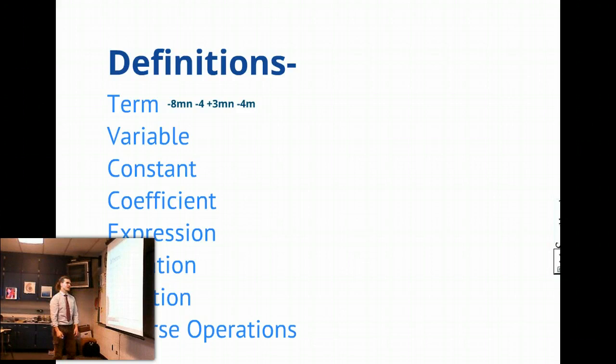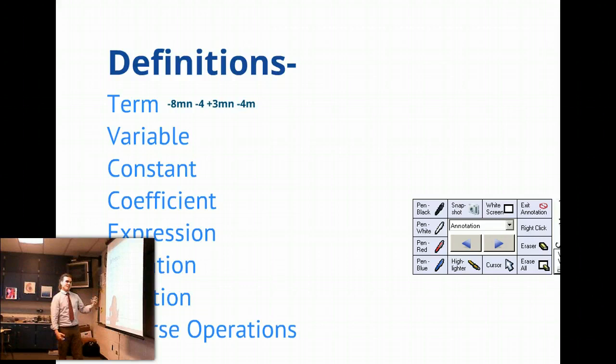Terms start with a positive or negative sign or operation of addition or subtraction. So you'll see this minus 8mn, that is all one term, and then it stops when I run into the next subtraction sign, which would make my next term, plus 3mn would be my third term, minus 4m would be my fourth term. What you can see is that any term can have a sign or an operation.